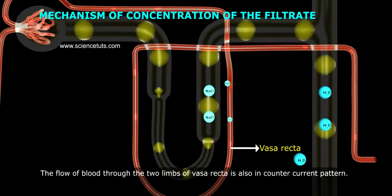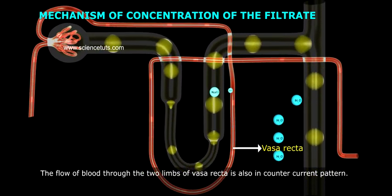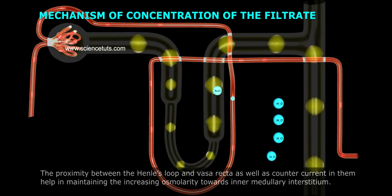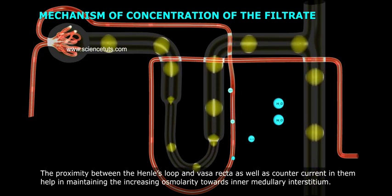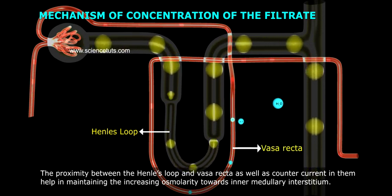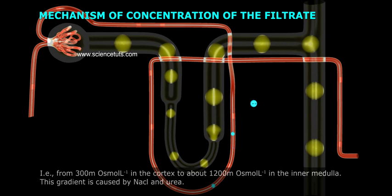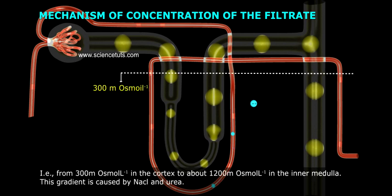The flow of blood through the two limbs of Vasa recta is also in a countercurrent pattern. The proximity between the Henle's loop and Vasa recta, as well as the countercurrent in them, help in maintaining the increasing osmolarity towards the inner medullary interstitium, that is, 300 milliosmoles per liter.